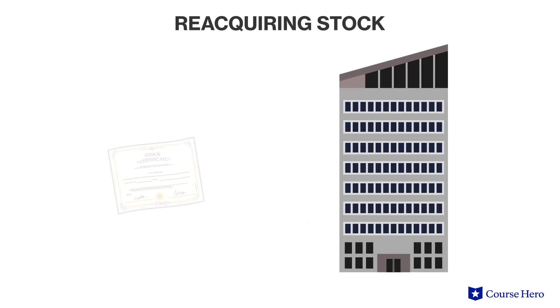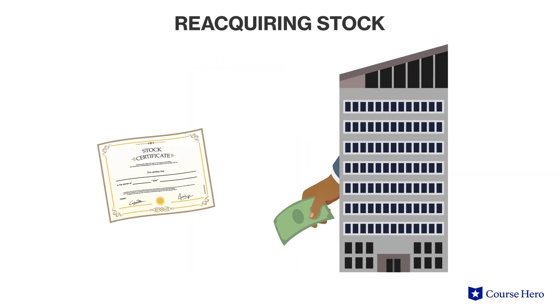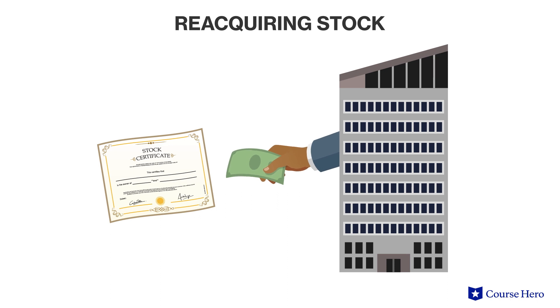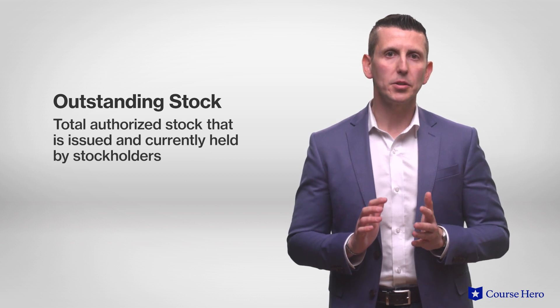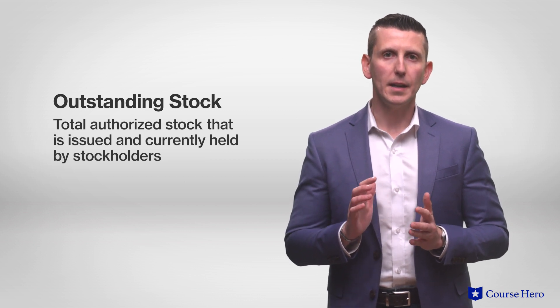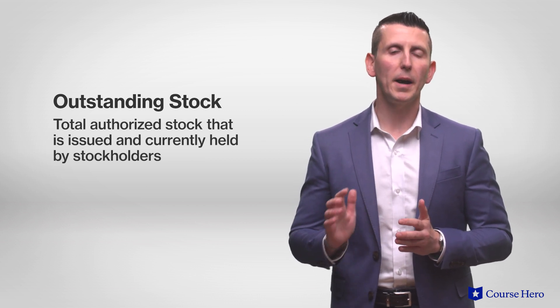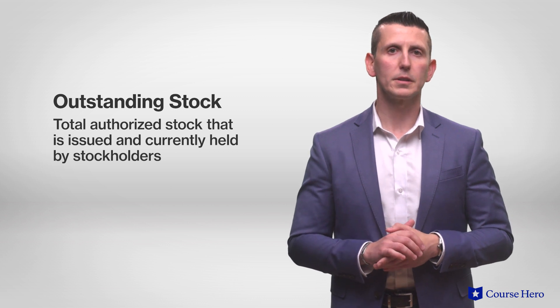Occasionally, corporations will reacquire stock after it has been issued, which is known as treasury stock. Outstanding stock is the total authorized stock that is issued and currently held by stockholders. In most cases, outstanding shares represent issued shares net of treasury stock.